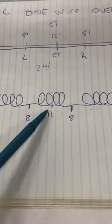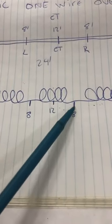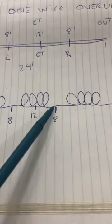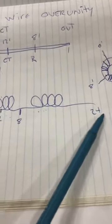12 feet to 16 feet, this is the other half of the turning, and we're going to have a tap point here. And from 16 feet to 24 feet, we're going to have the final winding. So it's really that easy. It's the magic one wire over unity device.